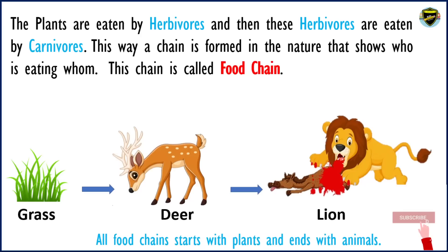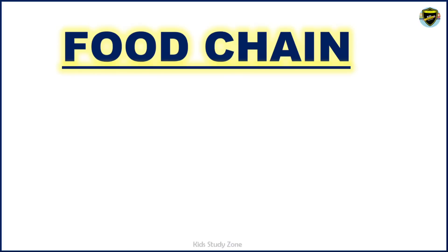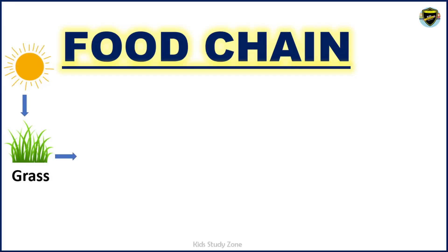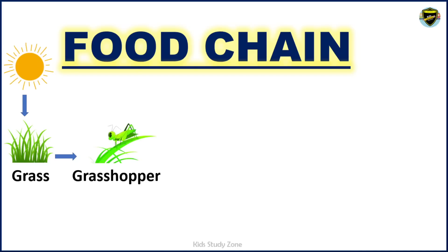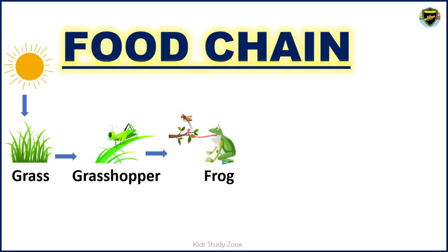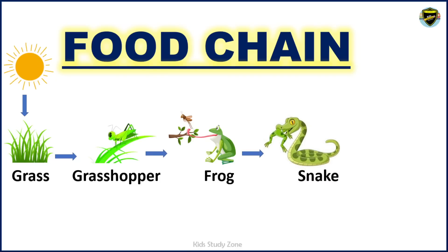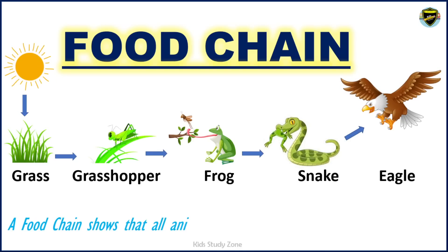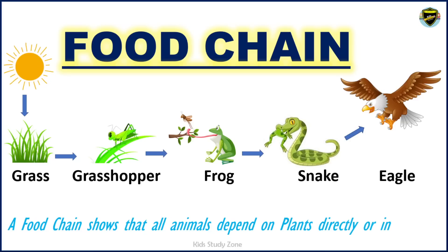Now we will see another food chain. Here, grass is the producer and the grasshopper is the primary consumer. This grasshopper is eaten by the frog, that is the secondary consumer. And this frog is eaten by the snake, that is the tertiary consumer. And this snake is eaten by the eagle. A food chain shows that all animals depend on plants directly or indirectly.